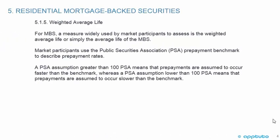For mortgage-backed securities, a measure widely used by market participants to assess is the weighted average life, or simply the average life, for the mortgage-backed security. Market participants use the Public Securities Association (PSA) prepayment benchmark to describe prepayment rates. A PSA assumption greater than 100 means prepayments are assumed to occur faster than the benchmark, whereas a PSA assumption lower than 100 means prepayments are assumed to occur slower than the benchmark.